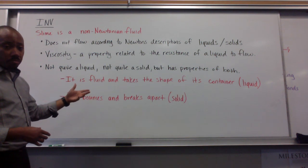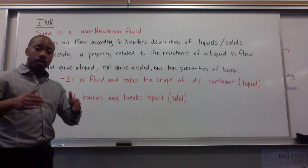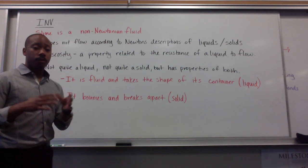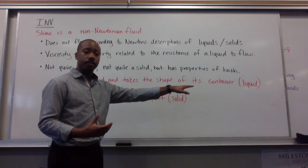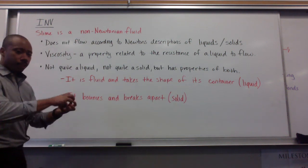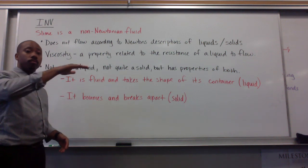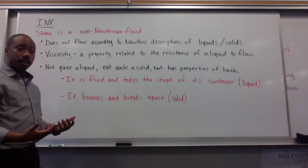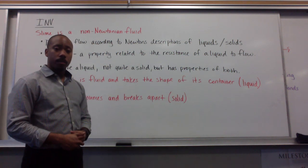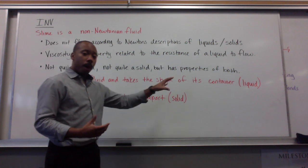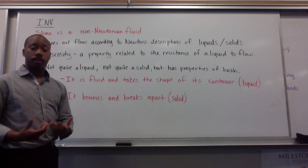So it is fluid — it takes the shape of its container. If you left that slime in your beaker, it would level out and take the shape of the beaker, just as a liquid would. But when you took it and balled it up and bounced it on the ground, it literally took a hop — it bounced, and it broke apart. Those are properties of a solid. So when a substance has properties of both liquid and solid, we call it a non-Newtonian fluid. Slime falls in that category.